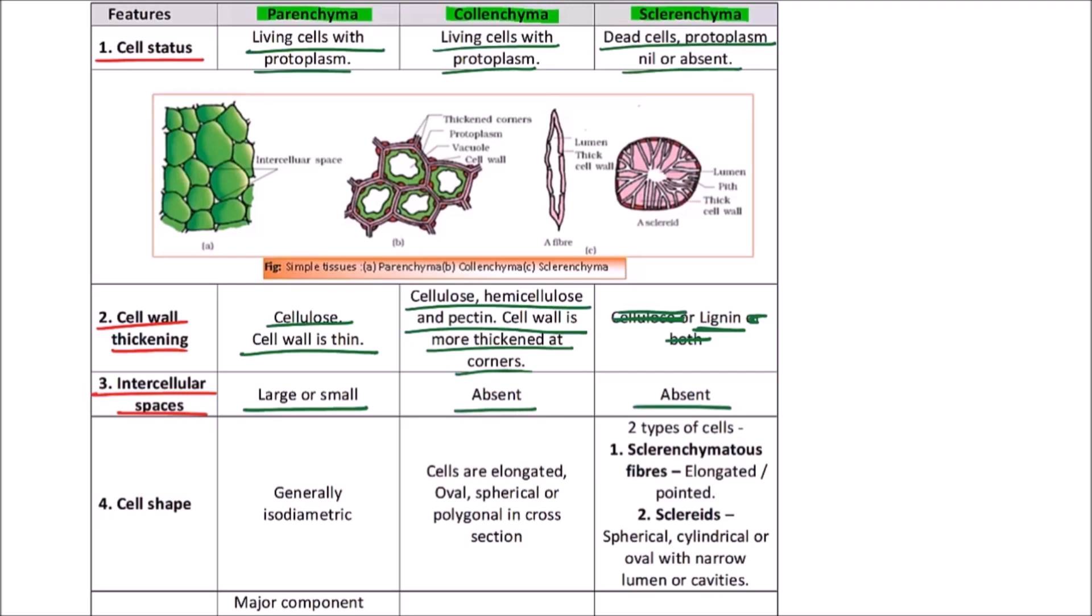The next is the cell shape. The cells are generally isodiametric. The cells are elongated in case of collenchyma, and in cross section they may appear oval, spherical, or polygonal. Then there are two types of cells in sclerenchyma: first is sclerenchymatous fibers, then second is sclereids. The sclerenchymatous fibers appear elongated and pointed, while the sclereids are spherical, cylindrical, or oval with narrow lumen or cavities.